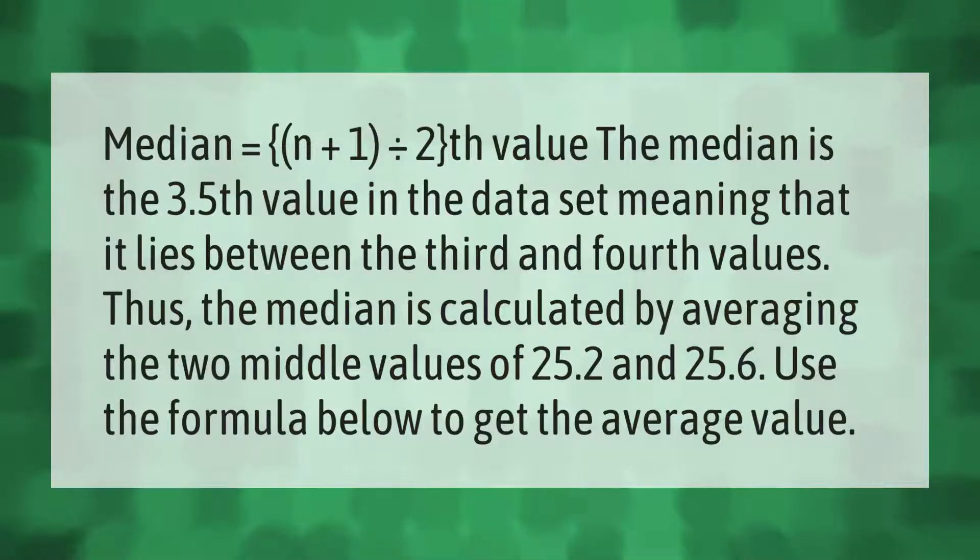The median equals the (n+1)/2 th value. For example, the median is the 3.5th value in the data set, meaning it lies between the third and fourth values. Thus, the median is calculated by averaging the two middle values of 25.2 and 25.6.